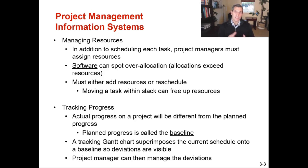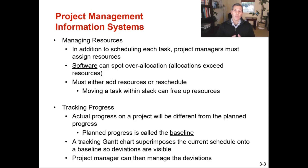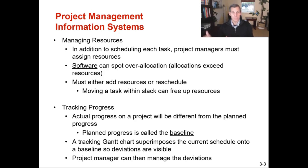In addition to scheduling each task, project managers can assign resources to each task. The software will spot over-allocation to individual resources. So if Brent is assigned to multiple activities — activity A taking eight hours and activity B taking 20 hours — it will spot when Brent is over-allocated. These systems can also determine over-allocation for costs. It's great for tracking costs to see if we're on track for both timing and our costs.